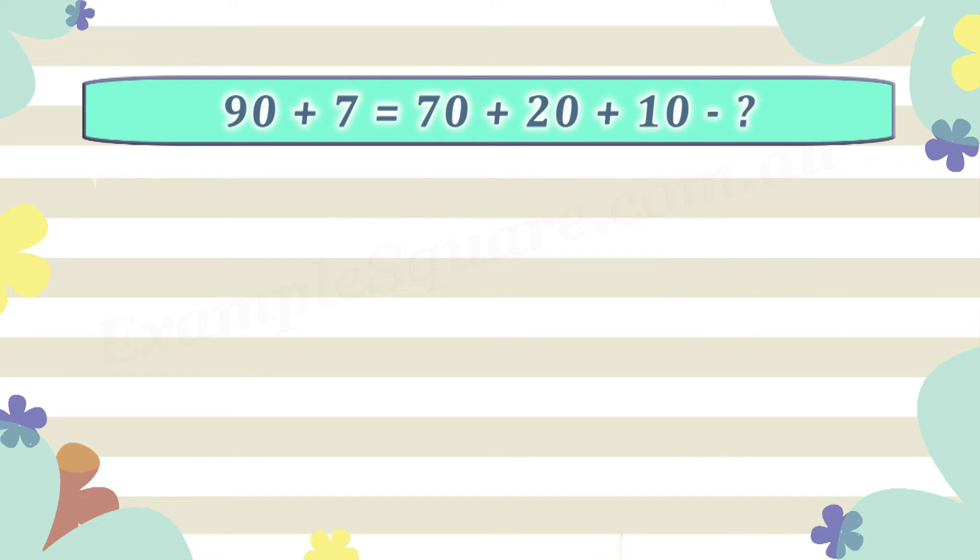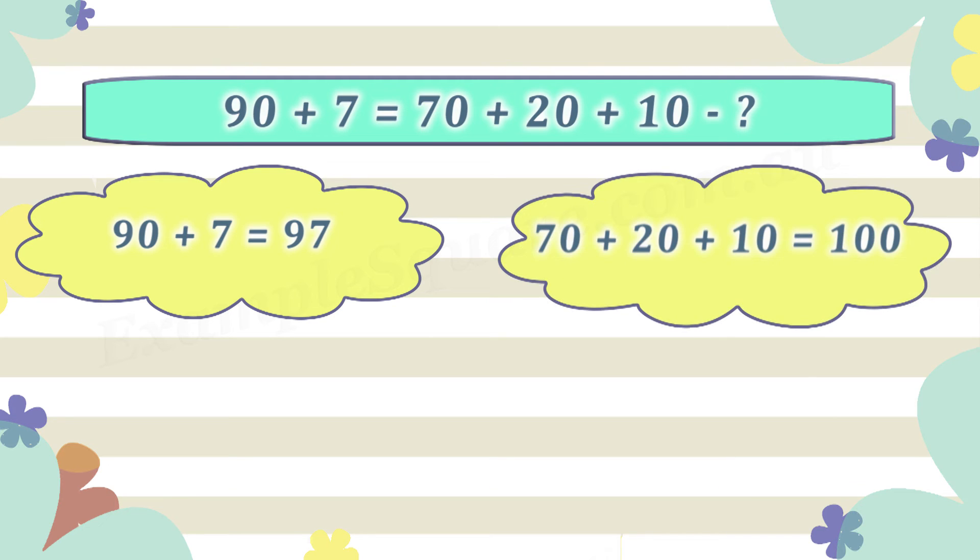Another way is to add up the given values in the equation and calculate the unknown value. The left side of the equation is 90 plus 7, that is equal to 97. On the right side, adding up the given values, 70 plus 20 plus 10 equals 100.